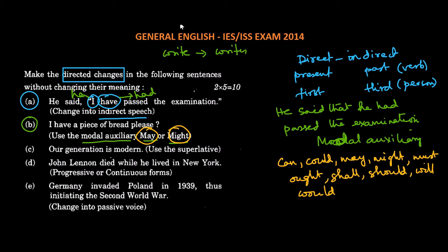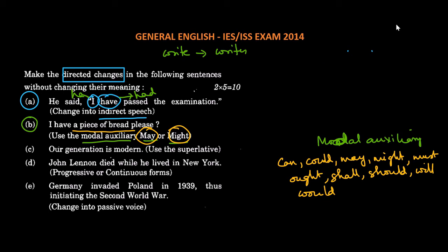And here we are asked to use the auxiliary may or might. And the sentence is, I have a piece of bread, please. So all we have to do is introduce may in the beginning. So the sentence will become, may I have a piece of bread, please.